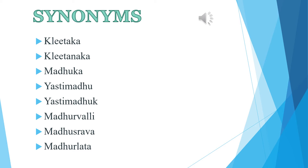Some important synonyms of Yashti Madhu. First is Klitak — it cures male infertility, and because of this property it is given the name Klitak. Klitanak — it is found in terrestrial regions, so it is given the name Klitanak. Madhuka — it is very sweet like honey, hence the name Madhuka. Yashti Madhu — the stem or stick and roots are sweet in taste, hence the name Yashti Madhu.